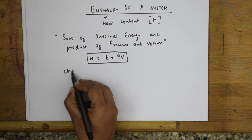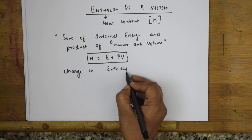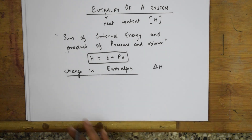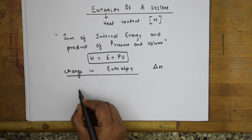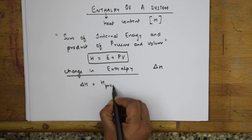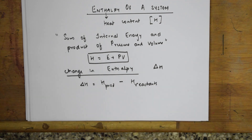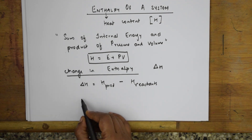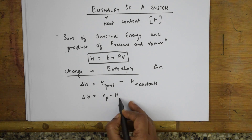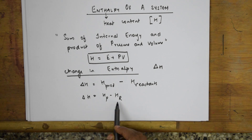Now, if we talk about change in enthalpy, H becomes delta H. In chemistry, we define delta H as the heat content of the products minus the heat content of the reactants — that is, delta H = HP minus HR.